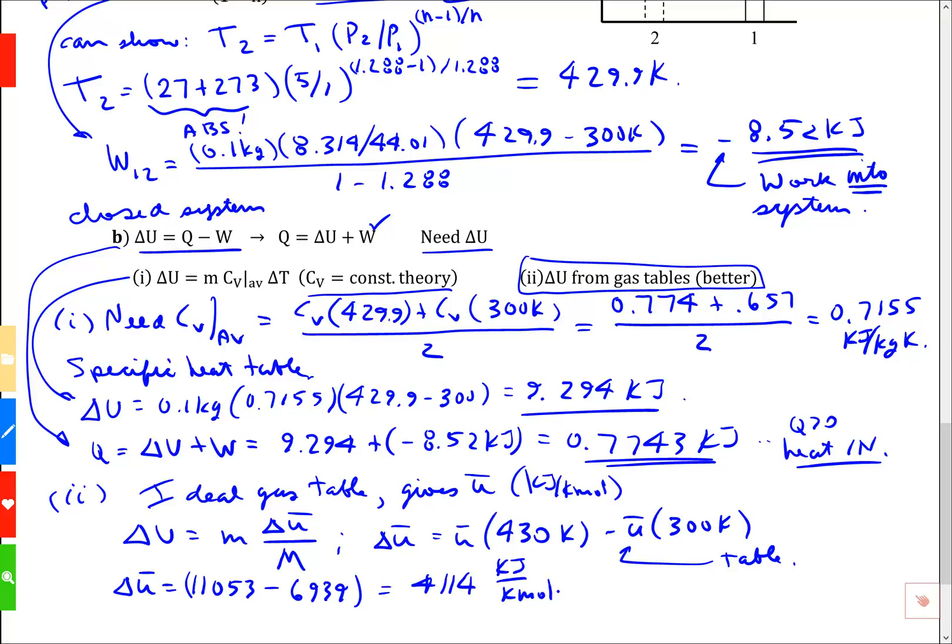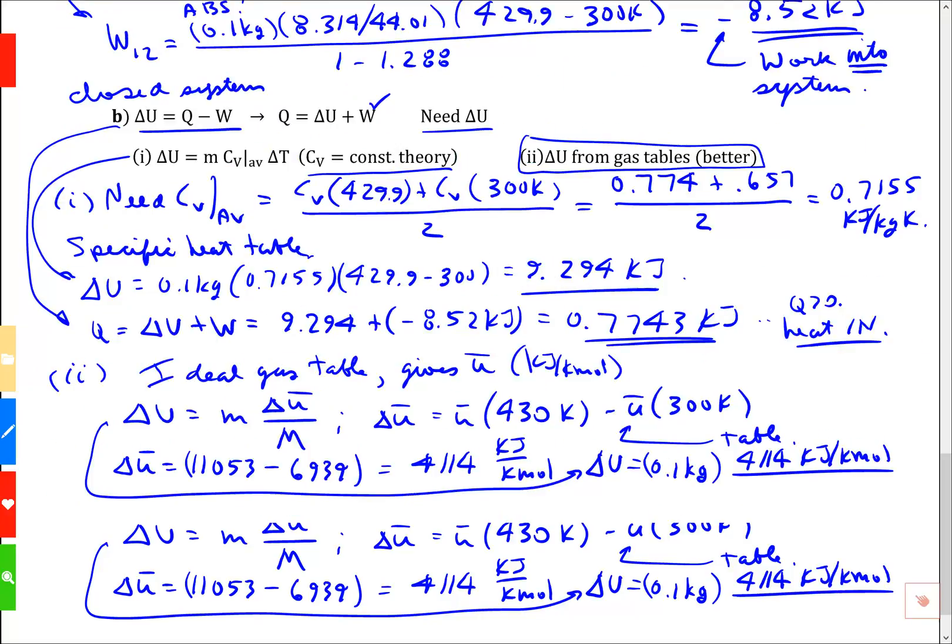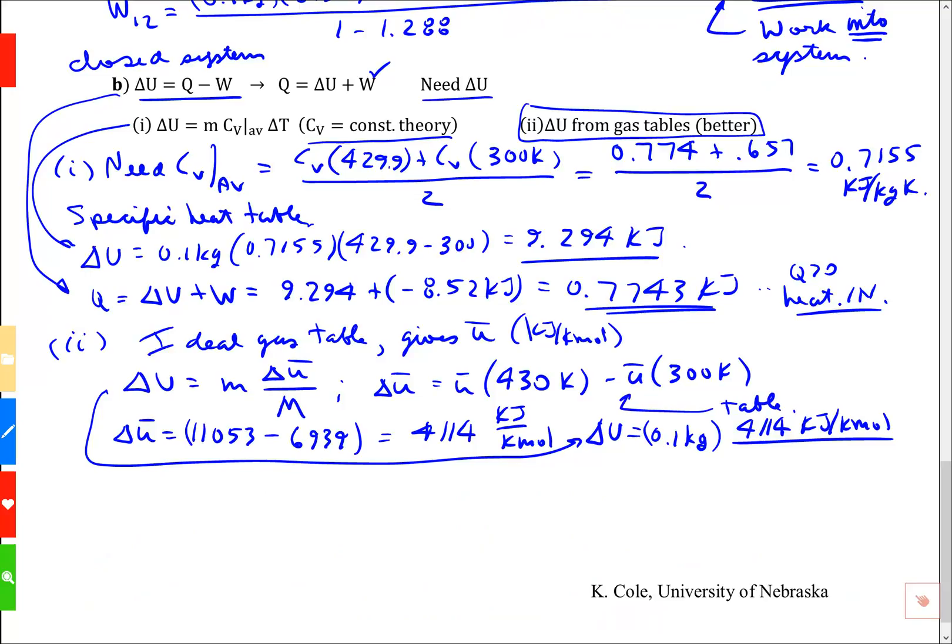Then delta u from here is going to be 0.1 kilograms times this value I just computed, 4114 kilojoules per kilomole, divided by the molecular weight of 44.01 for carbon dioxide.